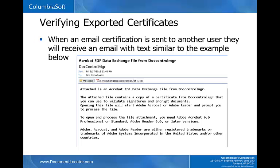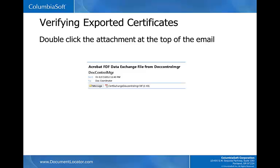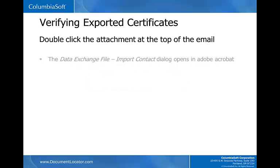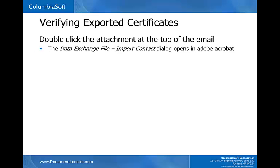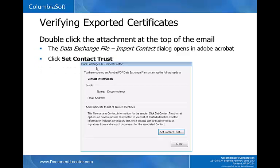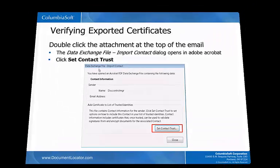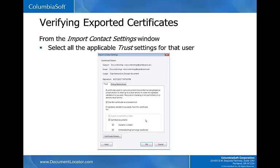When an email certification is sent to another user, they will receive an email with text similar to the following example. Double-click the attachment at the top of the email. The Data Exchange File Import Contact Dialog opens in Adobe Acrobat. Click Set Contact Trust. From the Import Contact Settings window, select all the applicable trust settings for that user. Use this certificate as a trusted route allows the imported trusted identity certificate to be used as a trusted route, allowing the signature validation process to succeed.